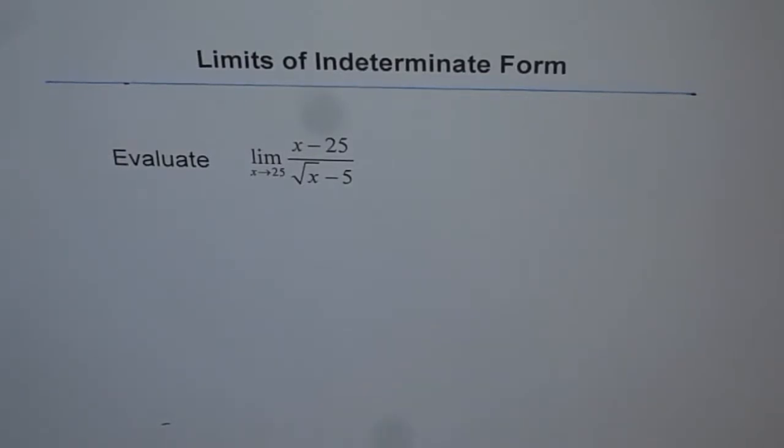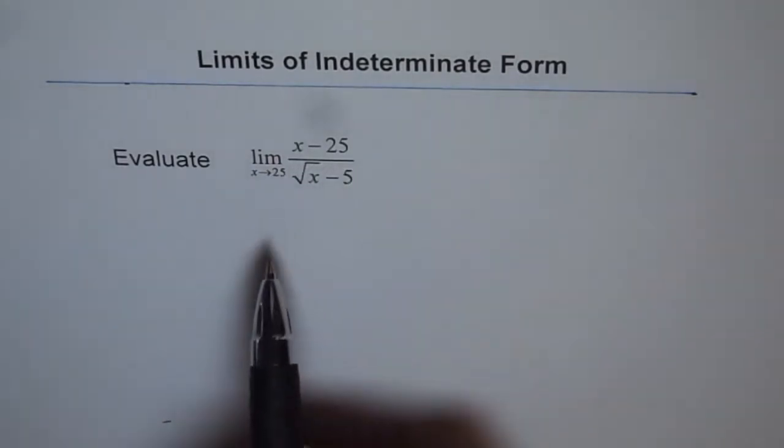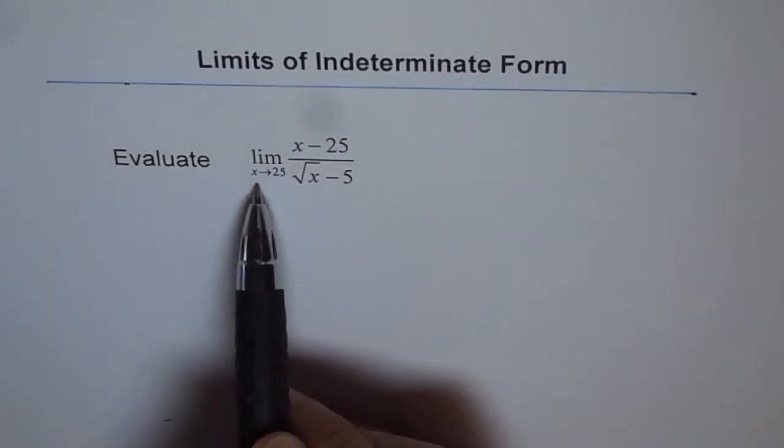Limits of indeterminate form. Evaluate the limit of x minus 25 divided by square root of x minus 5, where x is approaching 25.